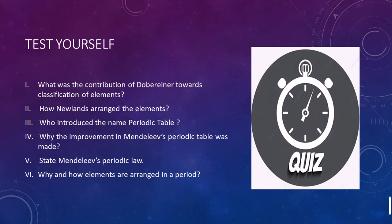Why was an improvement to Mendeleev's periodic table necessary? Because Mendeleev's periodic table stated that periodic properties of elements were based on atomic masses, which was incorrect. According to H. Moseley in 1913, the periodic properties of elements are based on atomic numbers, not atomic masses. Who stated Mendeleev's periodic law? It was the law that arranged elements by atomic mass. Finally, elements are arranged in the modern periodic table in increasing order of their atomic numbers.